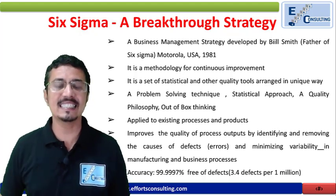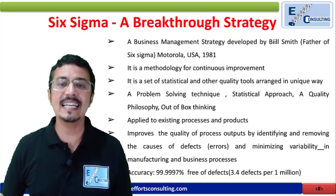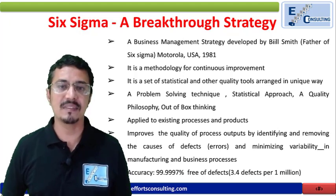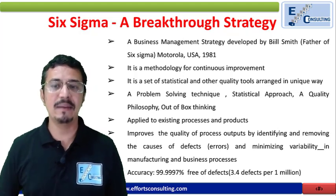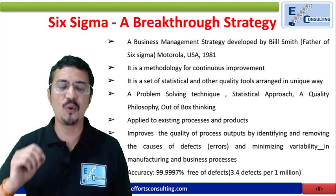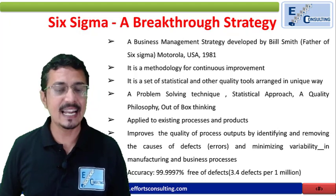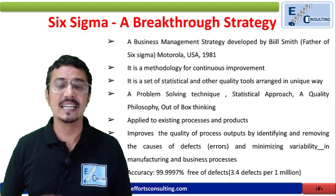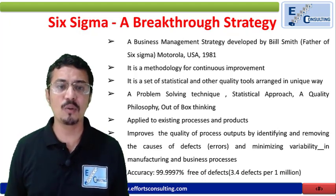If you are working at the Six Sigma level, then you can claim that you are working at 99.9997% accuracy — that means almost zero defects. And if you would like to define it in methodical terms, you are working at 3.4 defects per million opportunities. If you are producing 10 lakh products and you are having only 3 or 4 defects, then you can say you are working at Six Sigma.